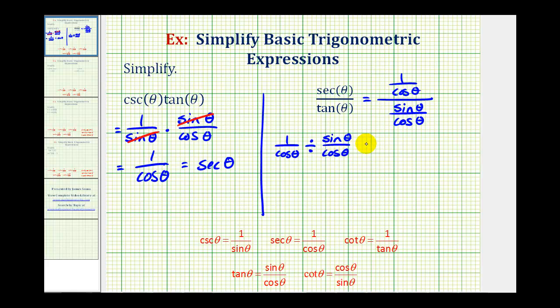But now we can also write every division problem as a multiplication problem. So instead of dividing by sine theta over cosine theta, we can multiply by the reciprocal or cosine theta over sine theta. So we can write this as one over cosine theta times cosine theta over sine theta.